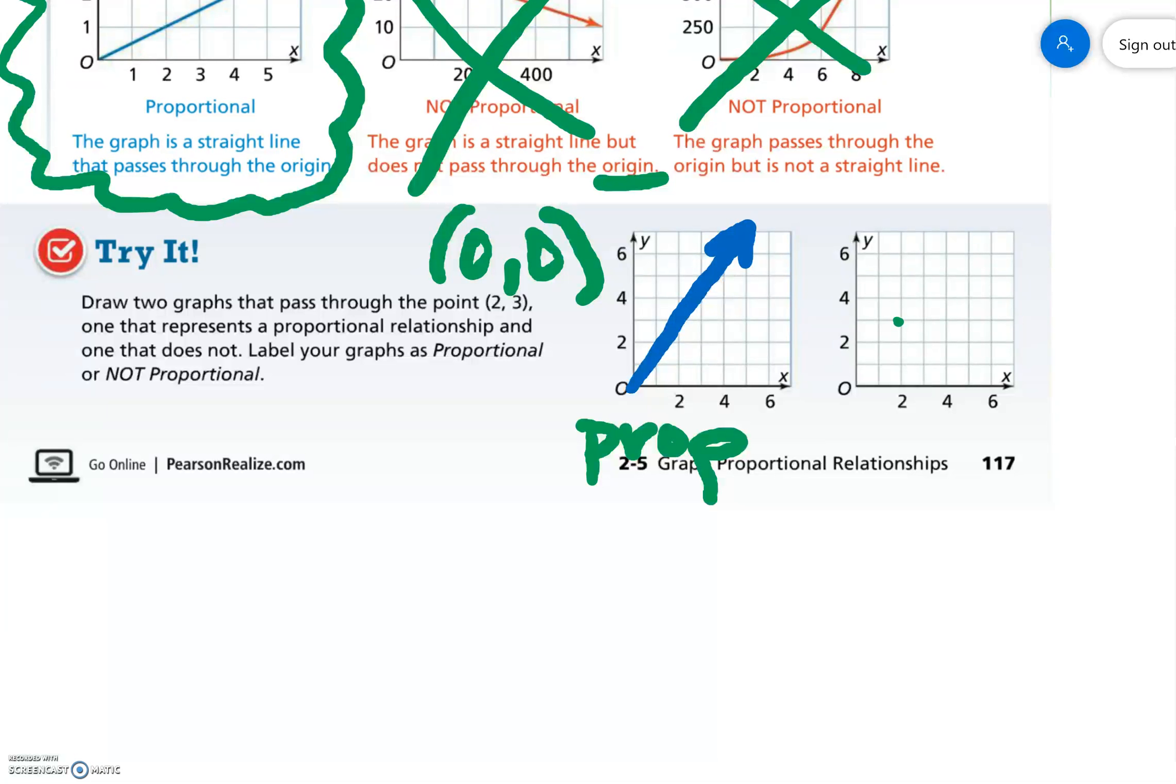The next one is not proportional. So it either can be a curvy line or it could not go through the origin or it could do both. So you could do something like that. That is not proportional.